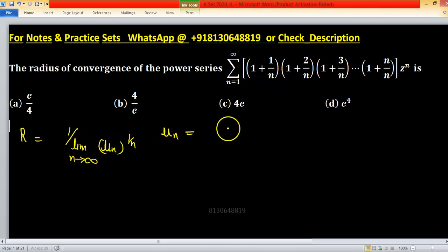In this problem, u_n is bracket 1 plus 1 upon n and so on up to 1 plus n upon n. This is your u_n.